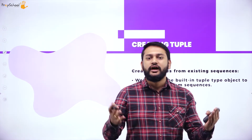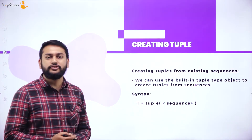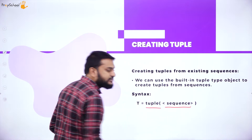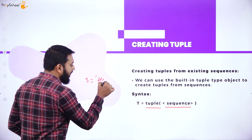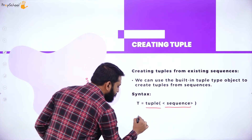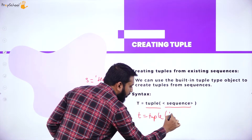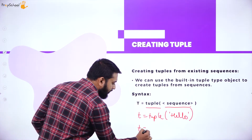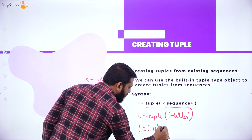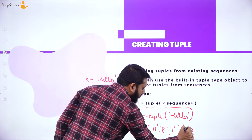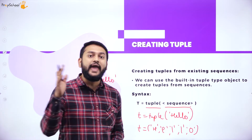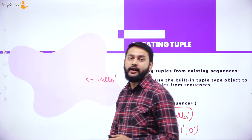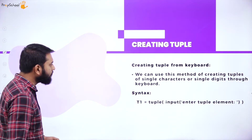How do we create a tuple using an existing sequence? This also remains the same as with lists. We use the function tuple() and pass the existing sequence inside it. For example, s equals 'hello', then t equals tuple(s) — this converts the string into a tuple. So this is how you create a tuple using an existing sequence.